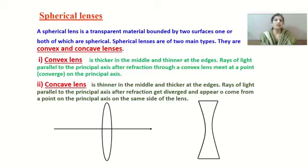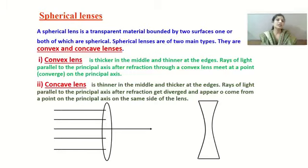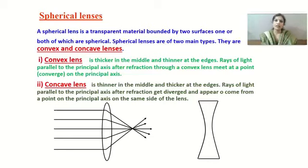Spherical lenses are of two types: convex lens and concave lens. A convex lens is thicker at the middle and thinner at the edges. When rays of light fall parallel to each other on a convex lens, after refraction these rays converge at one place on the principal axis. This point is called the focus of the convex lens.